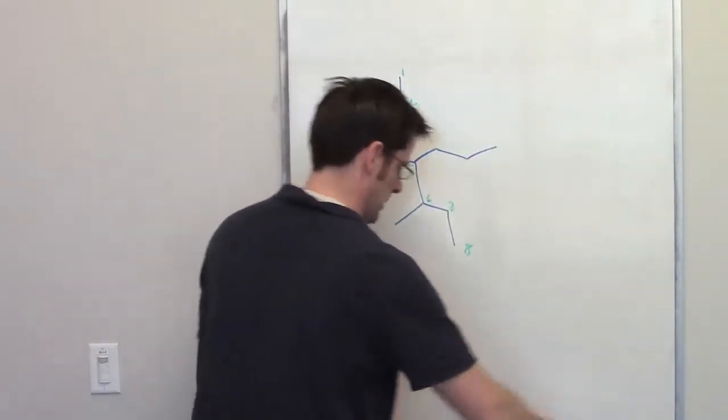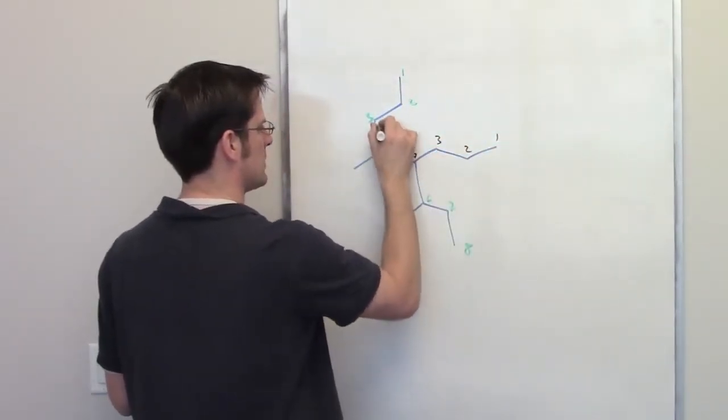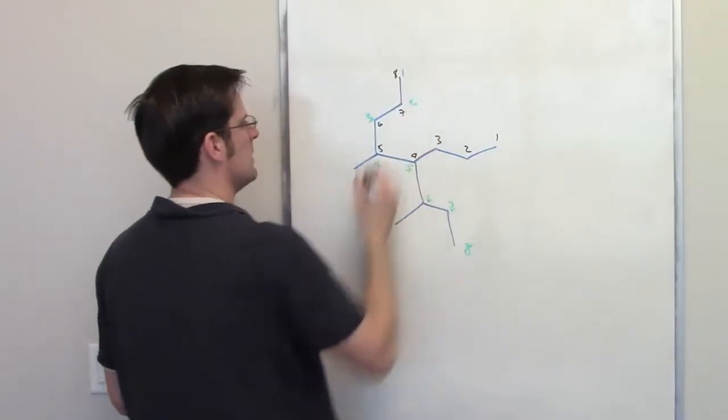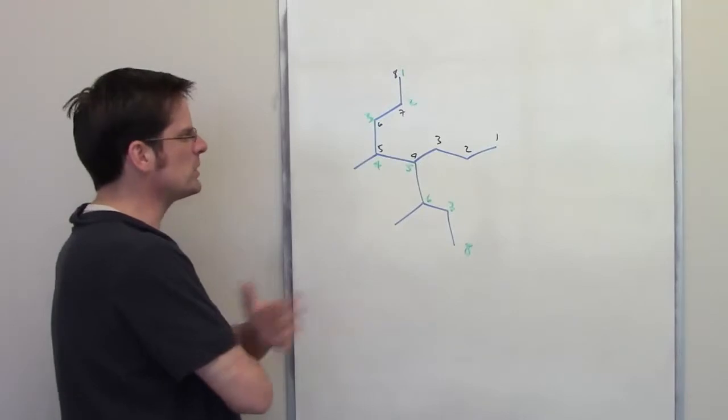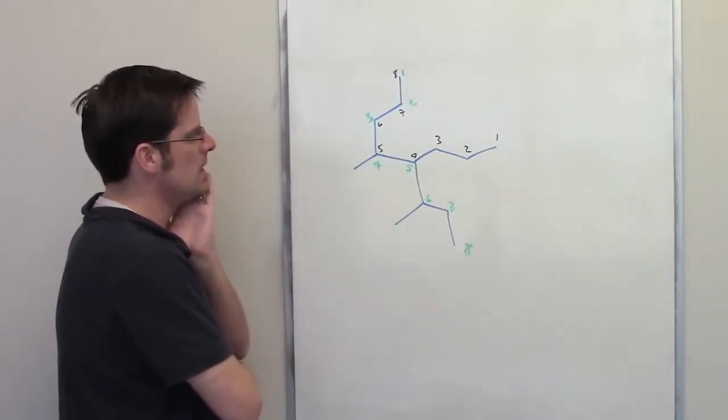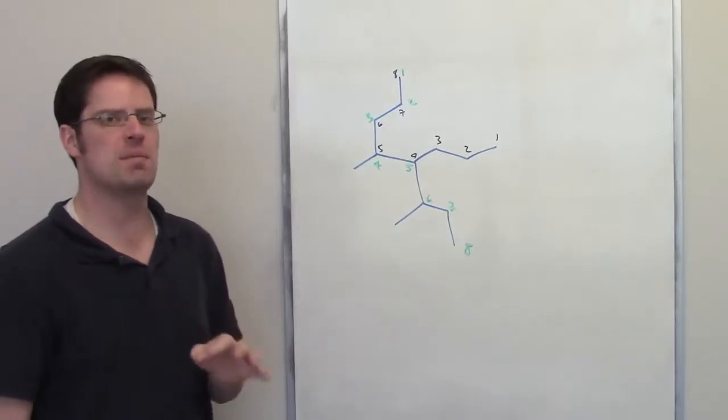I could go, I'll use the black marker here. So I could go here one, two, three, four, five, six, seven, eight. So those are two different potential chains that I could use. Which of those would be the better one? Well, the one that I'm going to want to pick is the one that has the fewest number of branch points on its substituents.